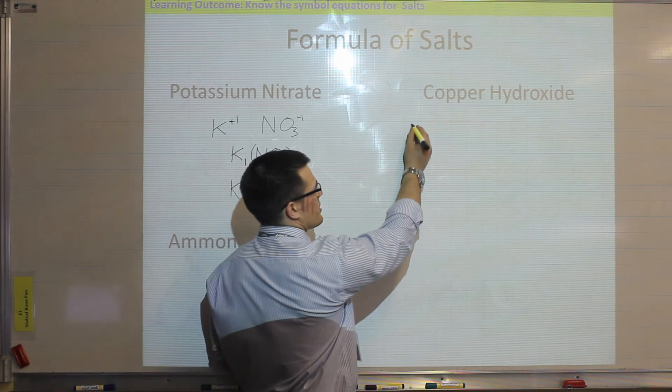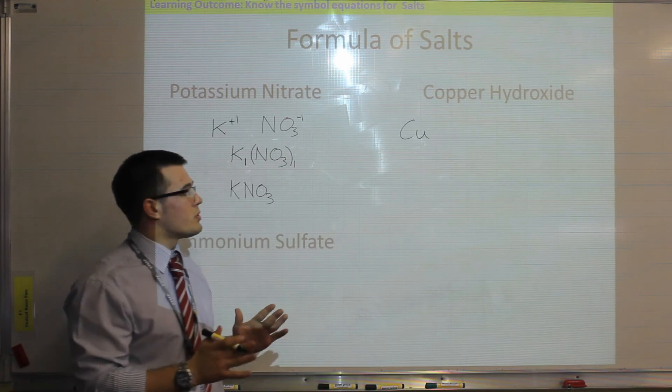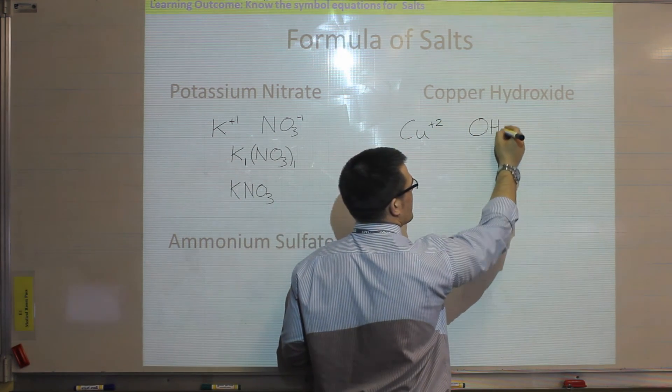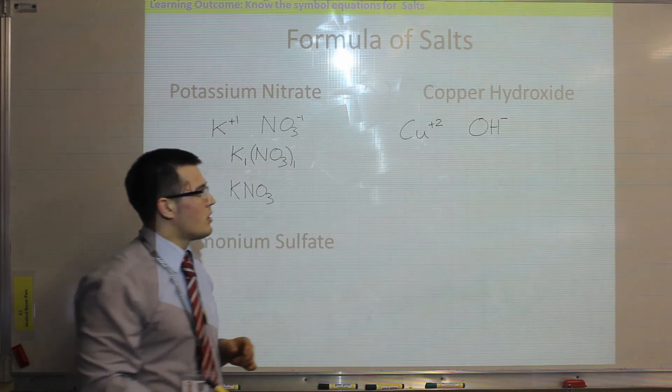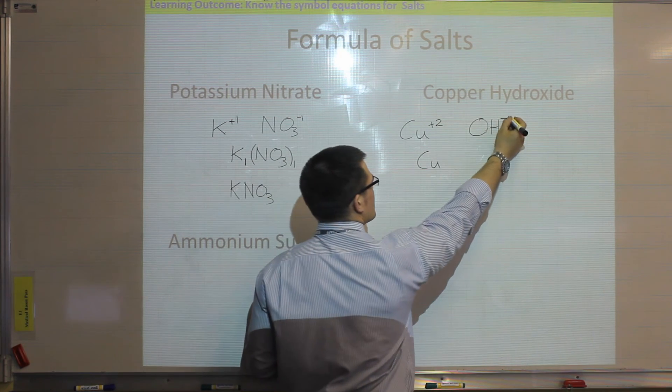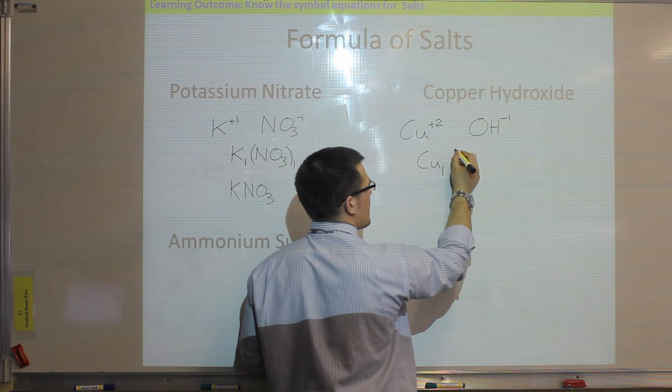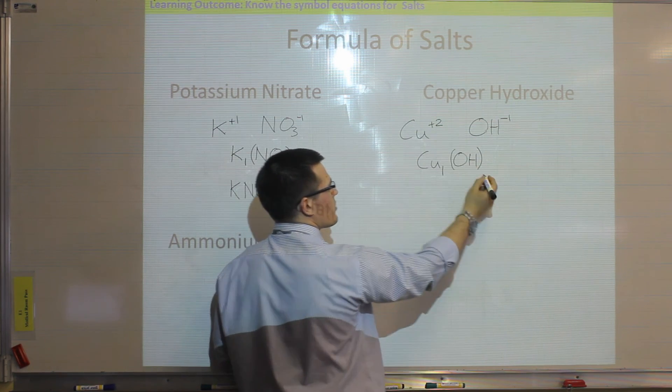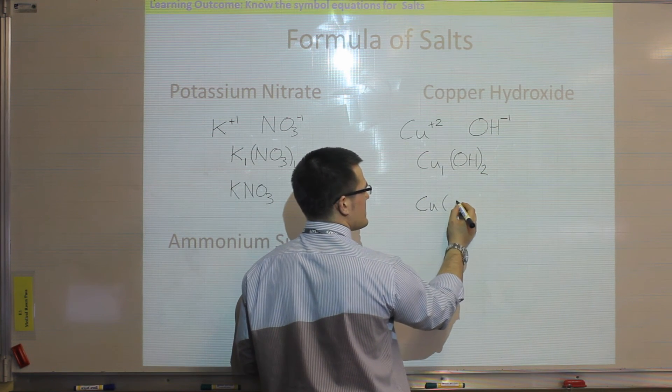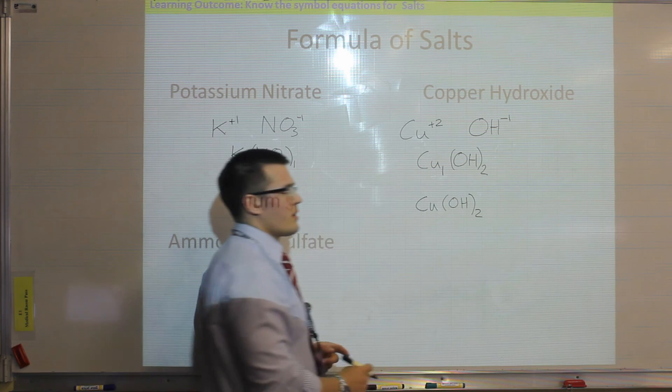If we look at copper hydroxide, copper is in the middle of the periodic table, so that's an example of one that we know is just plus 2. So copper is plus 2, and hydroxide is OH-, and it's minus 1. So we put our copper, and multiply that by the charge number on the hydroxide, which is just 1, and our hydroxide, again, we have to multiply all of that group by the number on the copper, which is 2. So the formula for copper hydroxide is Cu, brackets, OH, for the hydroxide, and we need 2 of those to balance.